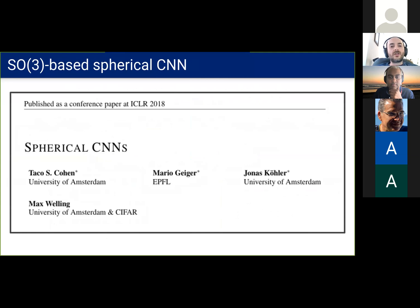This is used in Taco Cohen's spherical CNNs. The first layer is a spherical correlation that lifts the spherical inputs to the group SO(3). And all following features and filters are on the group and not on the sphere. But the disadvantage of this approach is that the group has more dimensions than the homogeneous space. So that increases the computational cost.